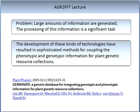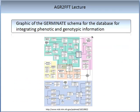Another resource by Lee et al. in 2005 is an article in Plant Physiology. This is not a central reading but you can have a look at the abstract, where you will learn about another genetic database and techniques for integrating both genotypic and phenotypic information for plant genetic resource collections. If you do read this, you will see how complicated and in-depth, and what a large degree of computation is required in order to achieve this. The figure on the slide shows some of this complexity — a graphic of the Germinate schema for the database for integrating both phenotypic and genotypic information.